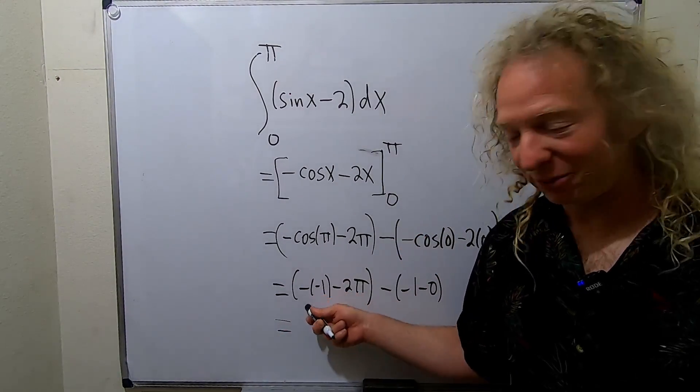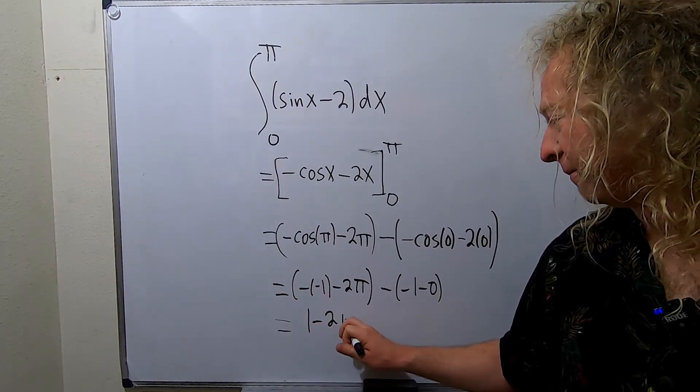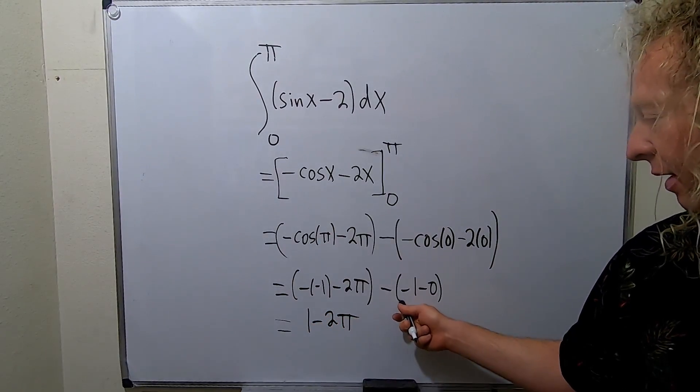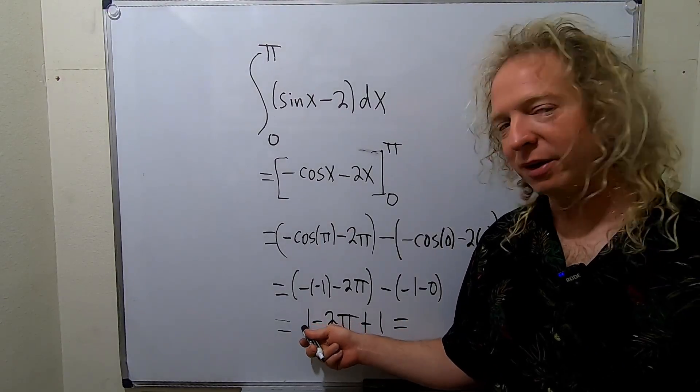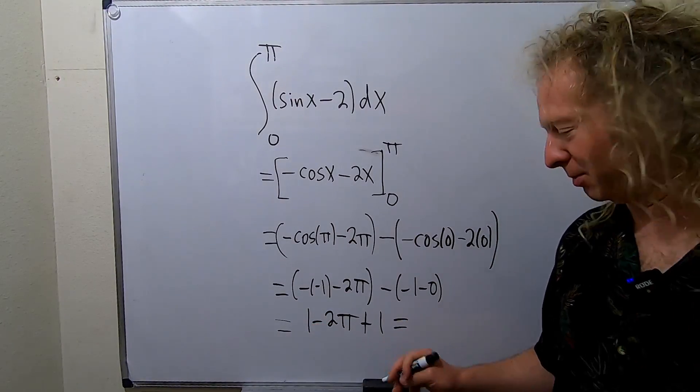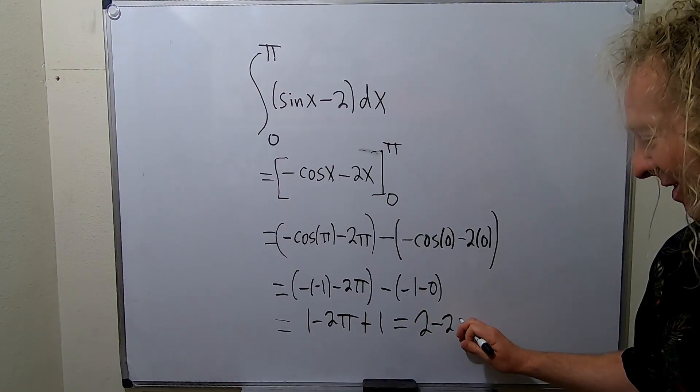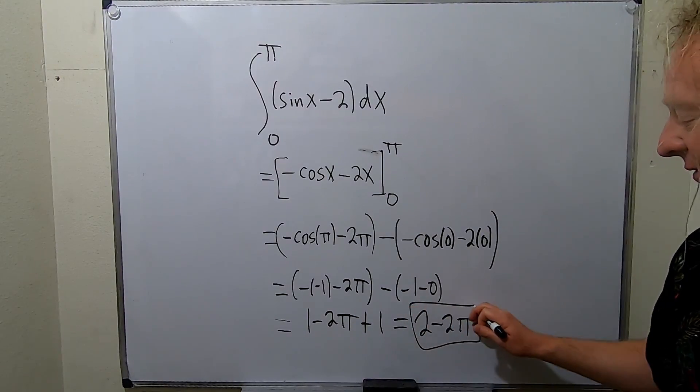This is 1, right? This is 1 minus 2 pi. Hmm, interesting. Oh, that's fun. Plus 1. And let's not mess up here. 1 plus 1 is 2. 2 minus 2 pi. And that is the final answer.